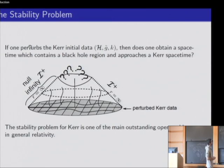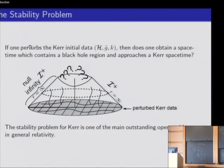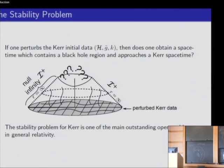We want to prove that the Kerr family is stable. By stability, I mean the following. Assume we have a Kerr spacetime containing a black hole. We take a spacelike slice — a Riemannian manifold — and perturb the geometry a little, obtaining perturbed Kerr initial data. We then solve the Einstein equations and obtain a new manifold. The main question is to understand how this perturbation propagates.